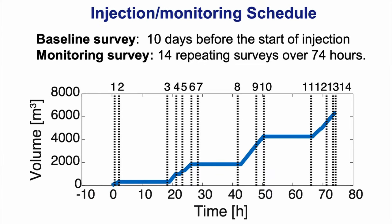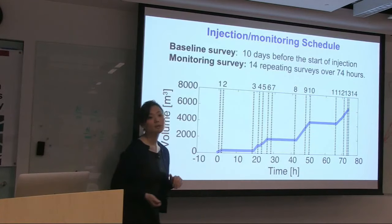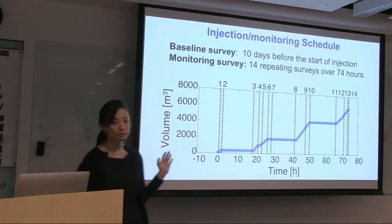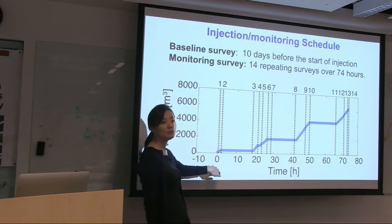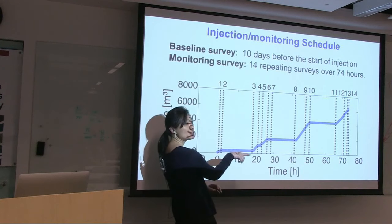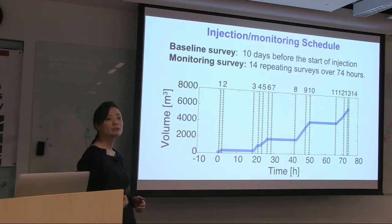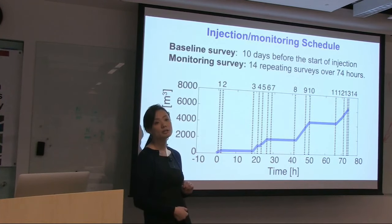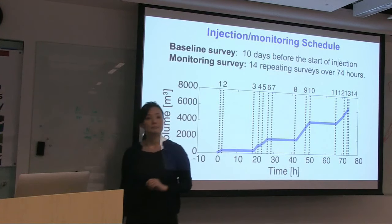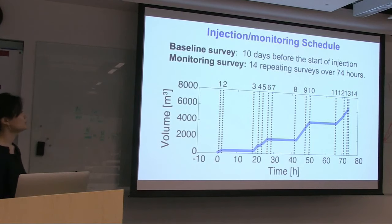How was the injection and monitoring done? The baseline survey was acquired 10 days before the start of injection. Then 14 monitoring surveys were performed over 74 hours. The schedule shows injection start, two surveys, then a stop for the evening. In the morning, injection resumed with five surveys, then stop-inject-stop cycles. The survey frequency was quite high, so we were hoping to see many changes.